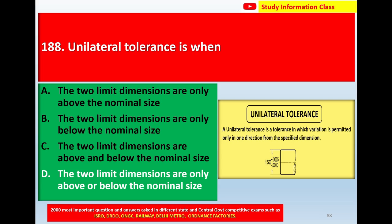A unilateral tolerance is a tolerance in which variation is permitted only in one direction from the specified dimension. For question 188, unilateral tolerance is when the two limit dimensions are only above or below the nominal size.